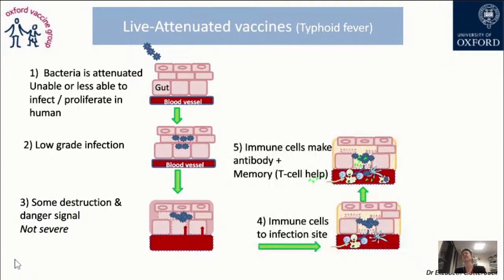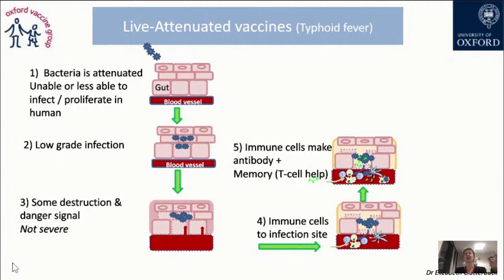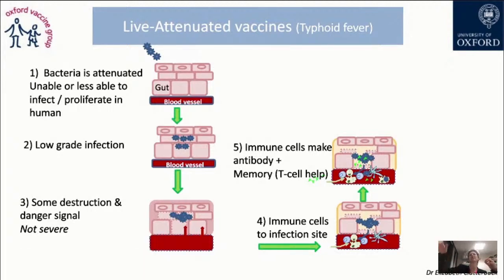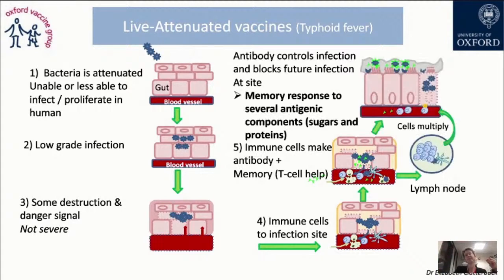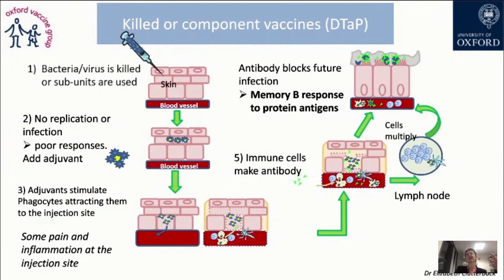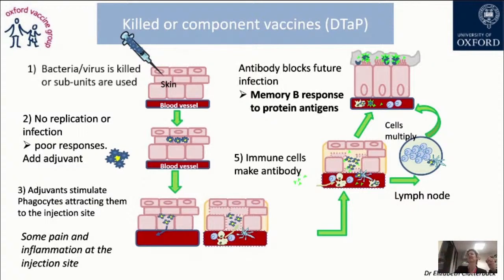The same process happens with a live attenuated vaccine — for example typhoid fever. The attenuated bacteria causes a low-grade infection and a mild danger signal, sufficient to push the immune system to mount a full response. With a killed or component vaccine such as DTaP, there is no replication, no infection, and no inherent danger signal, so an adjuvant is added to stimulate phagocytes, attract them to the injection site, cause some local inflammation, and push the immune response. The key take-home message is: without a danger signal, you don't get an immune response.